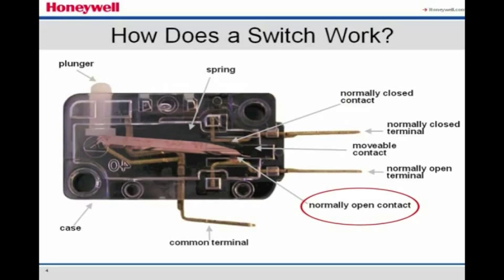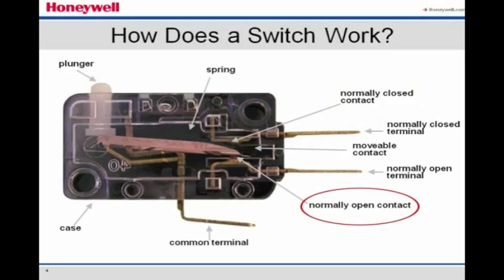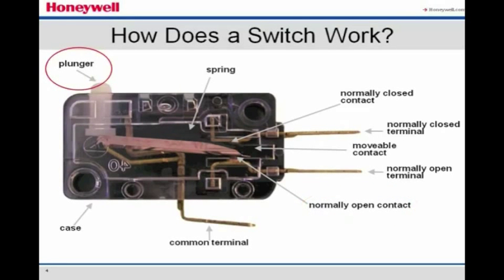Because the mechanism is designed for a snap action, the common contact cannot stop part of the way between the normally closed and normally open contacts. The normally closed circuit is now open, and the normally open circuit is closed. As the plunger is depressed past the operating point, the normally open circuit remains closed, and the normally closed circuit remains open.